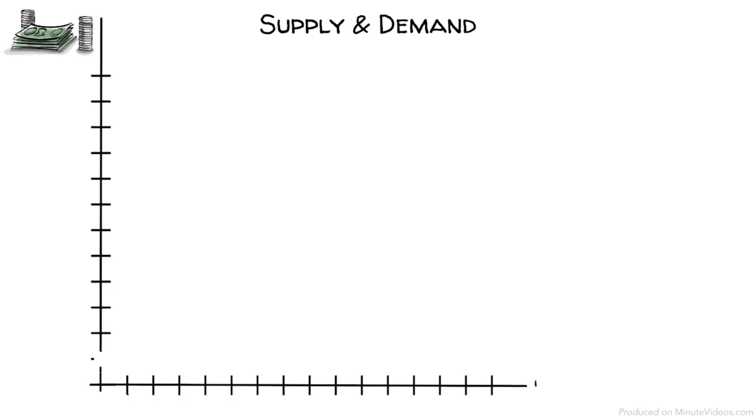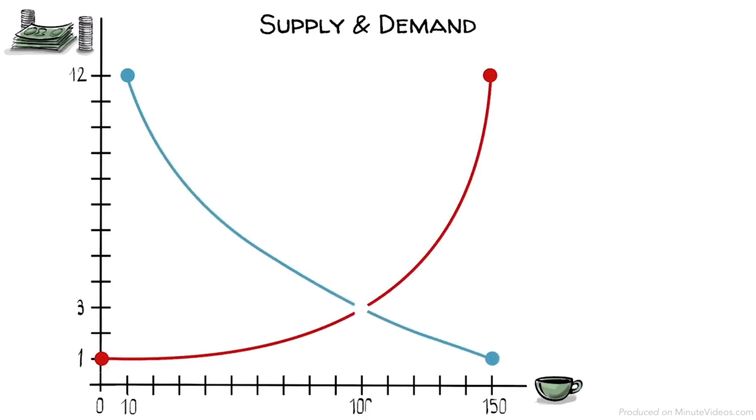Supply and demand on one graph look like this. At $12, the owner can supply 150 cups, but only 10 people would buy a cup of coffee at that price. At $1, he can't supply any, but demand would be 150 cups of coffee. The two curves meet at $3.00 and 100 cups.